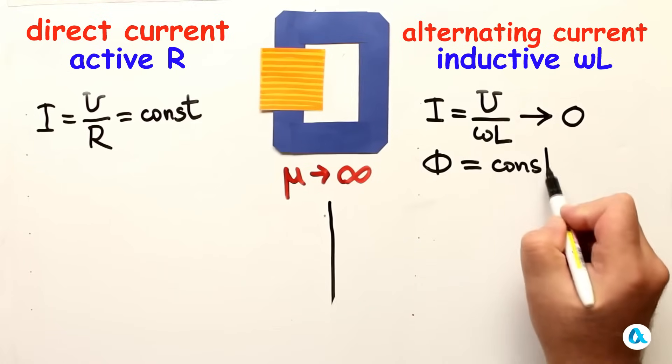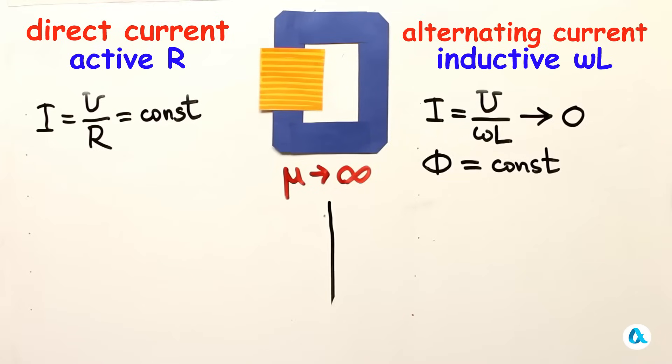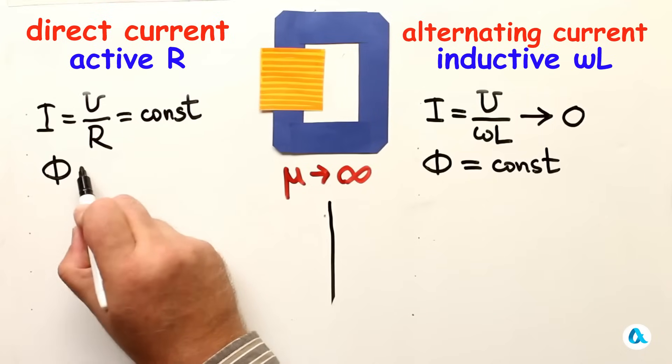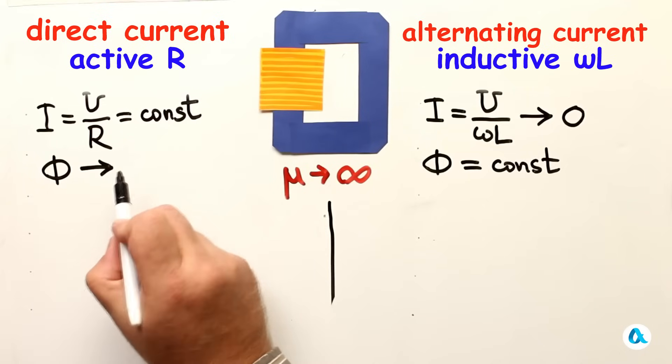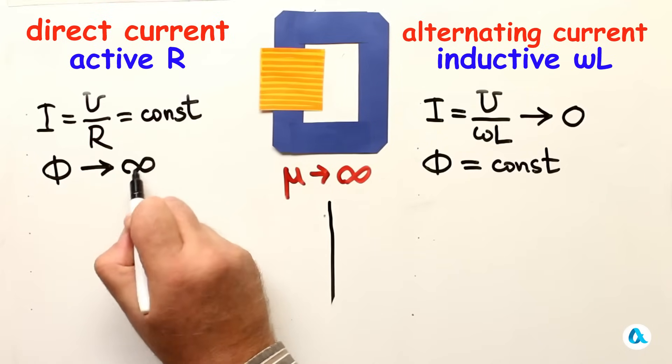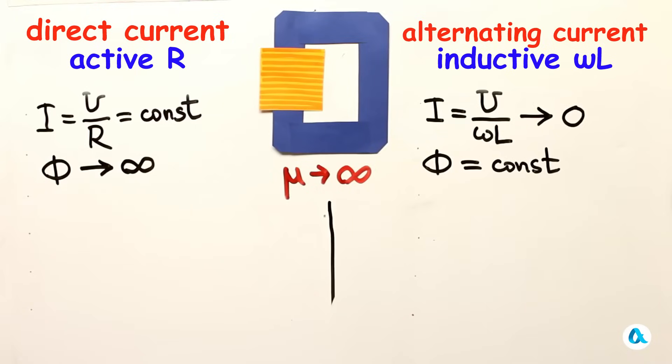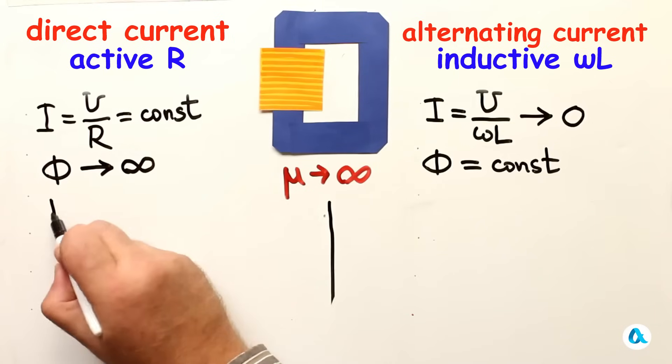And the constant by amplitude here will be the magnetic flux, because it must create such an opposing EMF that will balance the external EMF applied to the coil. As for this situation, here naturally the magnetic flux will indeed also tend to infinity. And we will talk about magnetic fields.